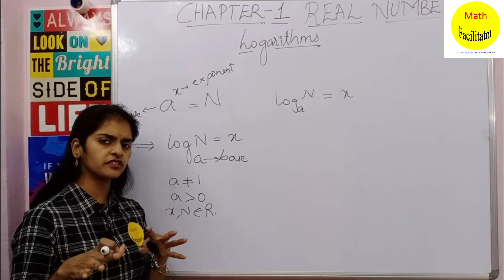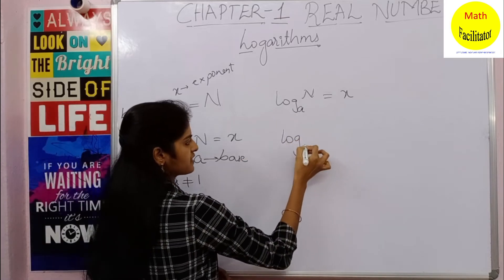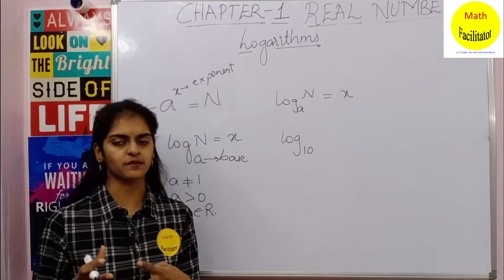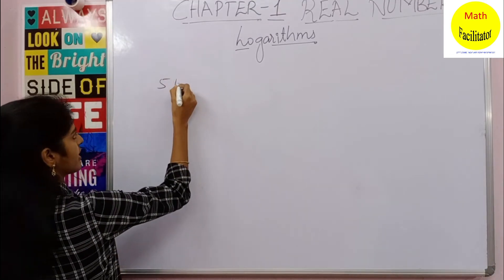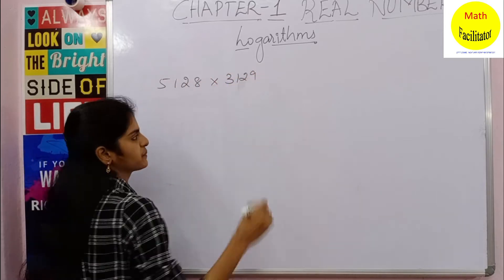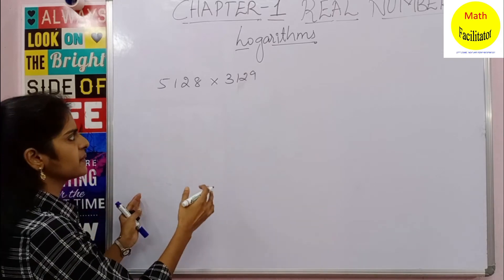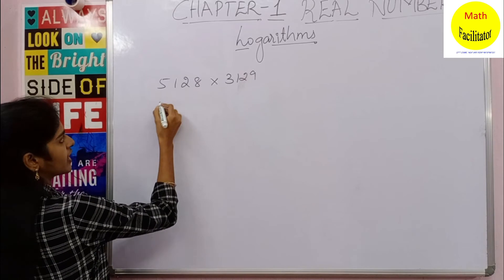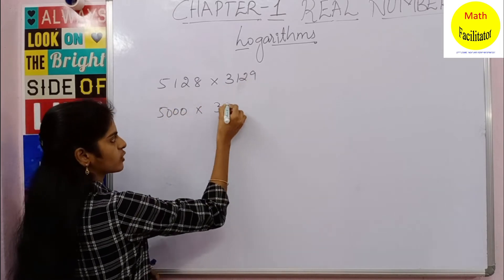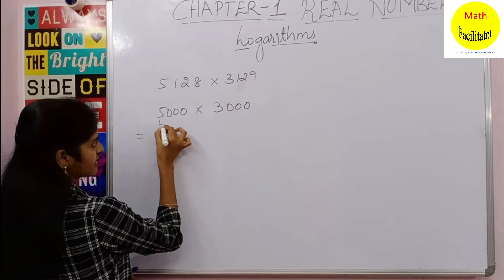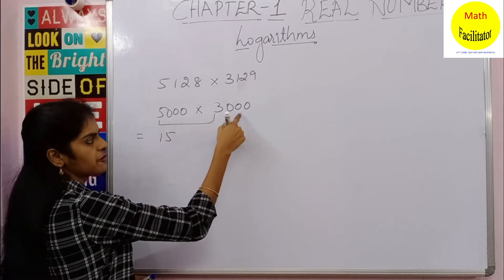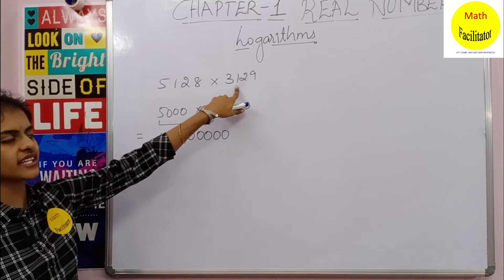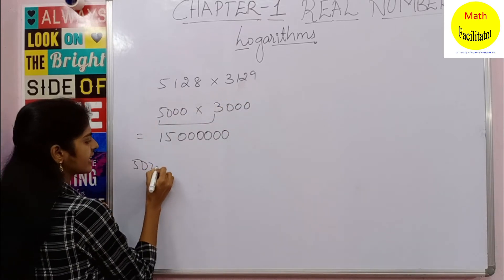For now, we will take logarithms only to the base 10. Whenever we speak about logarithms here, we mean base 10. Now, suppose you want to multiply 5128 into 3129 — that is a tedious, lengthy process. Instead, you can estimate the product: 5128 is close to 5000, and 3129 is close to 3000. Multiplying gives 15 followed by six zeros, so the estimated product is 15,000,000.